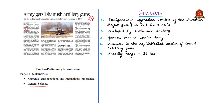Dhanush is the indigenously upgraded version of the Swedish Bofors gun procured in the 1980s. This indigenous development has been aided by a transfer of technology clause signed with the Swedish counterpart. Artillery guns are heavy guns that are more powerful and have a longer range than conventional handheld guns. These artillery guns have a range of 36 kilometres. Dhanush is more sophisticated when compared to the Bofors guns.